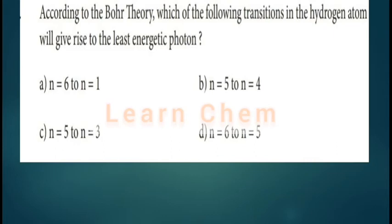According to Bohr theory, which of the following transitions in a hydrogen atom will give rise to the least energetic photon? The four options are: n=6 to n=1, n=5 to n=4, n=5 to n=3, and n=6 to n=5.